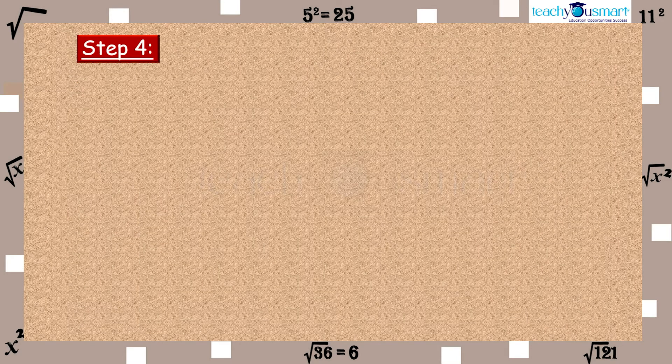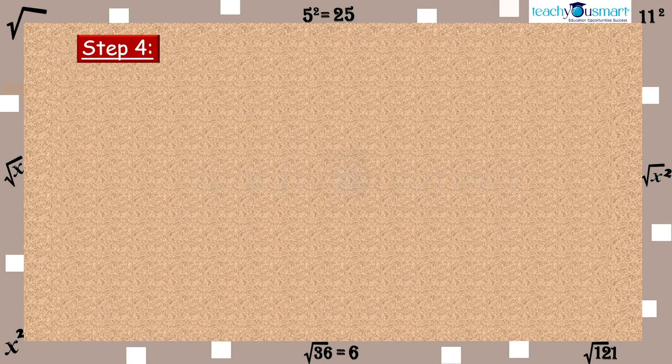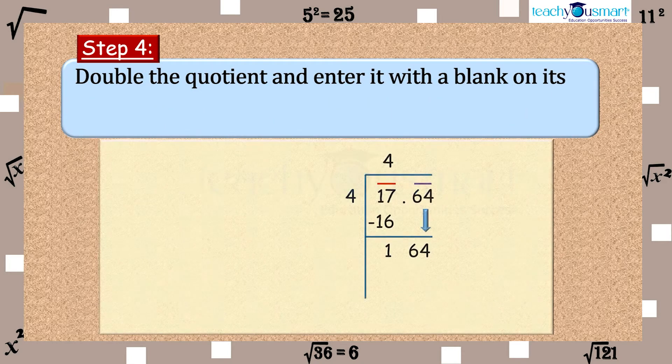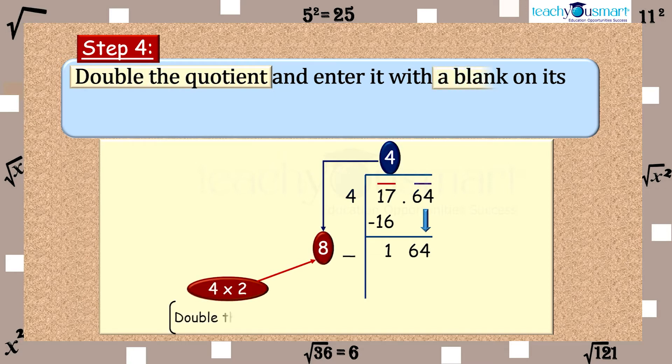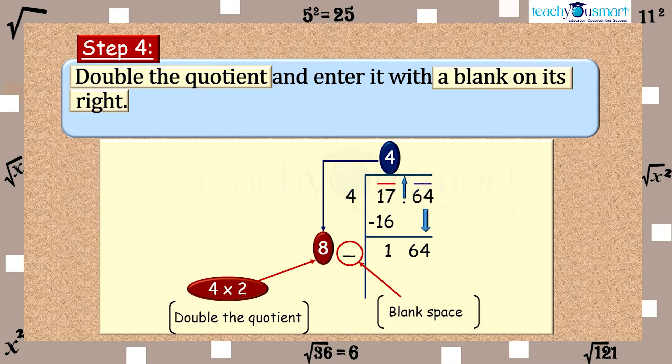Step 4. In order to determine the next divisor, double the quotient and enter it with a blank space on its right. Since 64 is the decimal part, so put a decimal point in the quotient.